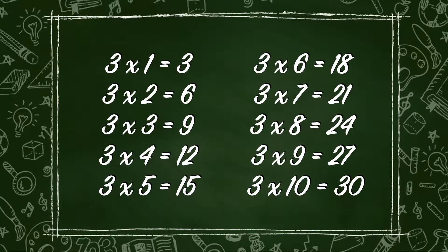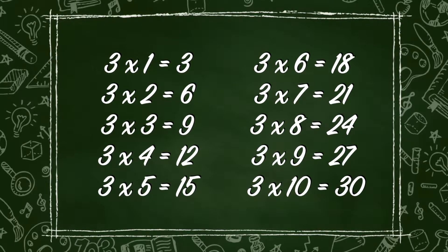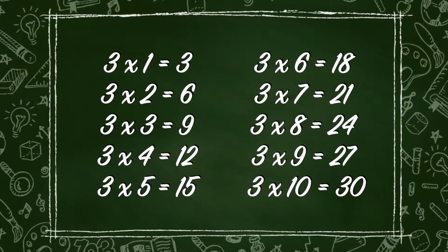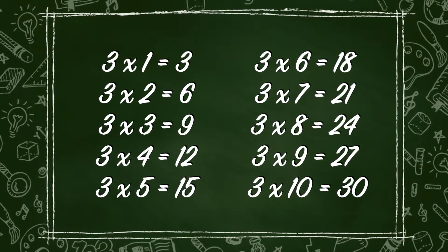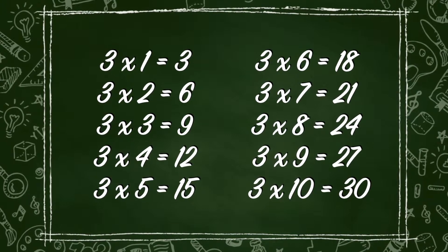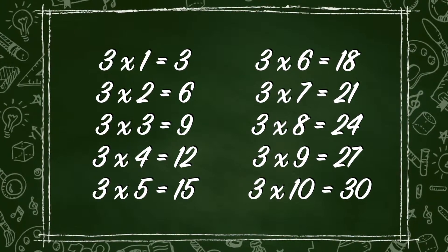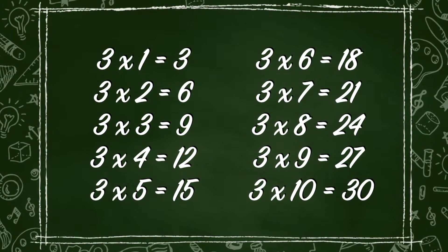3 1s are 3. 3 2s are 6. 3 3s are 9. 3 4s are 12. 3 5s are 15.